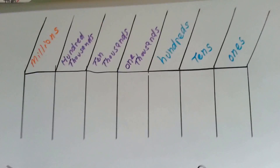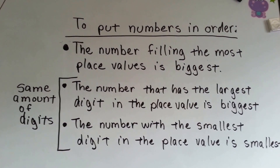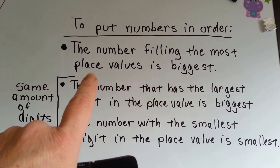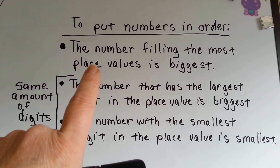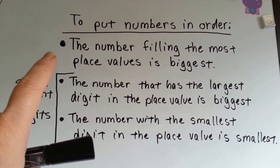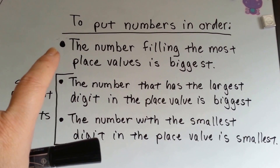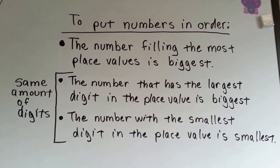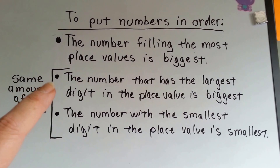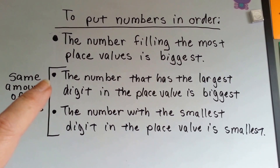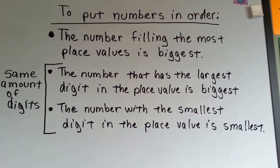So we're going to put numbers in order, but the first thing we need to do is look at the rules we're going to need to follow. To put numbers in order, the first thing is: the number filling the most place values is the biggest. If there's a number filling six place values and another only filling four, then the one with six is bigger. If they have the same amount of digits and place values, then the number with the largest digit in that place value is the biggest one, and the number with the smallest digit is the smallest.